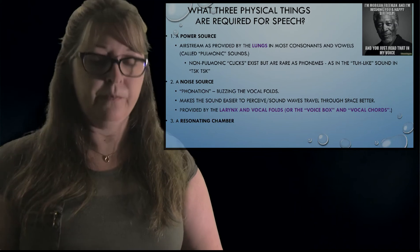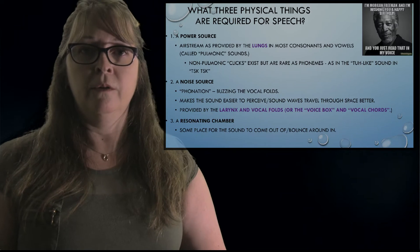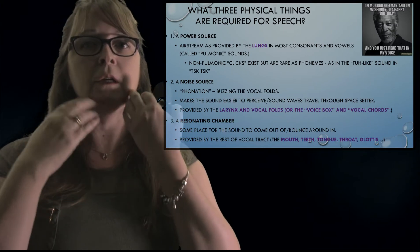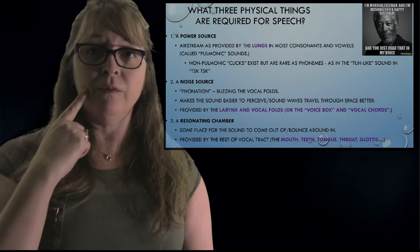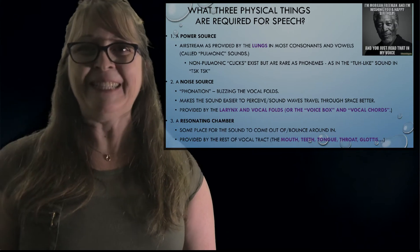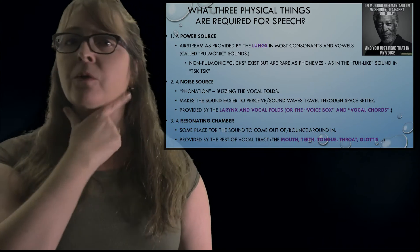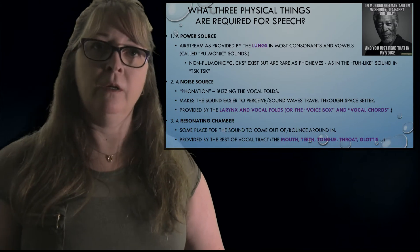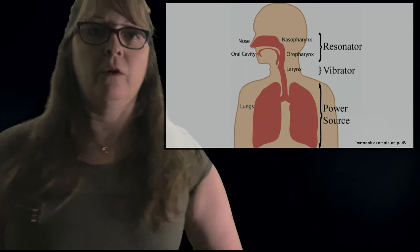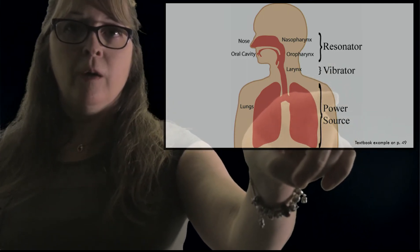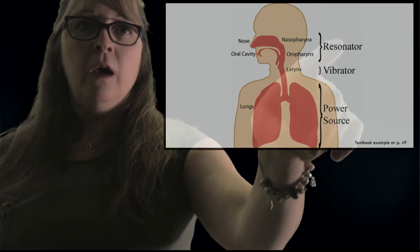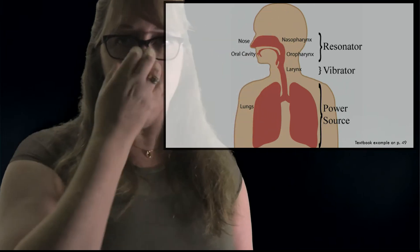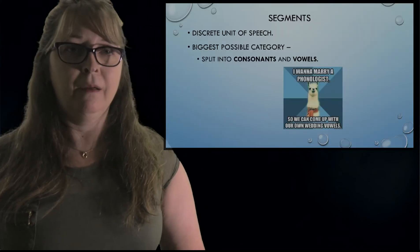So: larynx and vocal cords. And then you need a resonating chamber — where is the sound coming out? Your lungs push air up to your voice box, then it goes up and comes out through your mouth. Your teeth, your tongue, your throat, your glottis — some people pronounce sounds farther back. Three things required for speech: power source, vibrator (vocal cords/larynx), and then the resonator. Some people use their nose a lot to create that nasally sound.